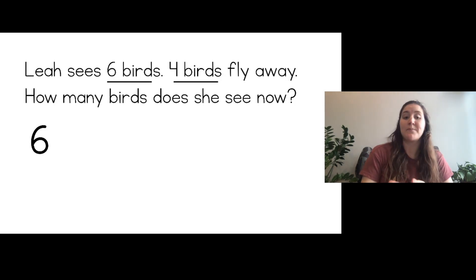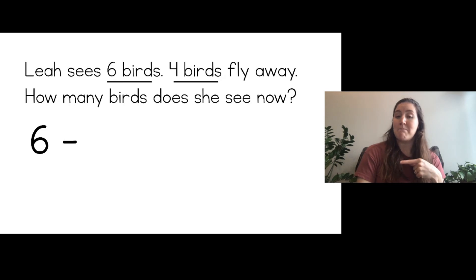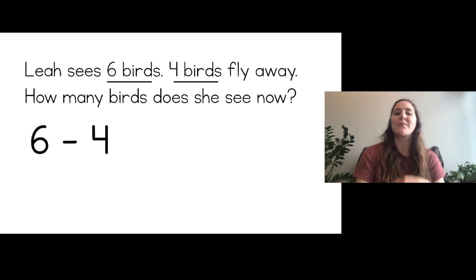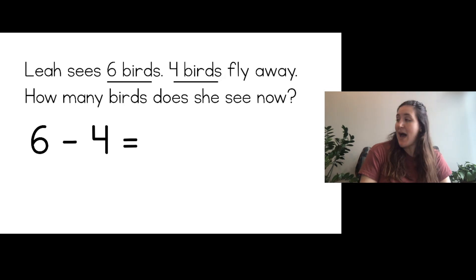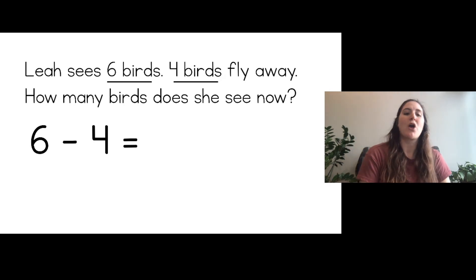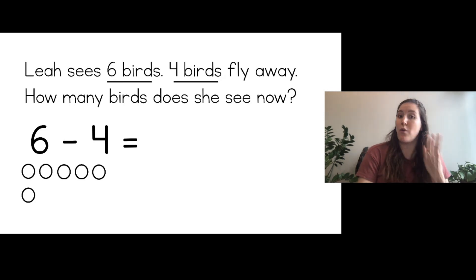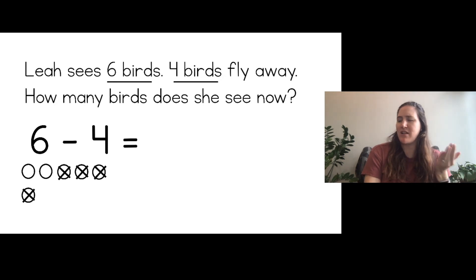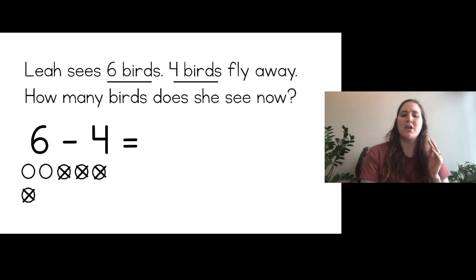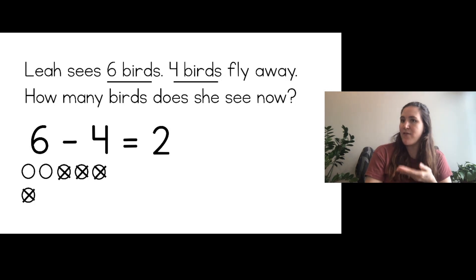Leah sees six birds to start and then four birds fly away, so I'm going to use the minus sign to show that I'm subtracting. I'm starting with Leah's six birds, minus — because they're going away — minus four. What does that equal? I will draw circles to solve. When I subtract, I first draw circles for the first number, which is six: one, two, three, four, five, six. Now I'll cross off four to show the four birds flying away: one, two, three, four. How many circles are left? Two circles. So six minus four equals two.